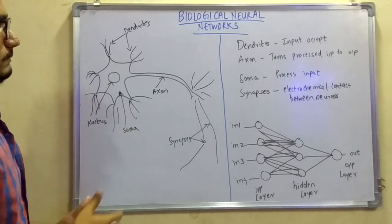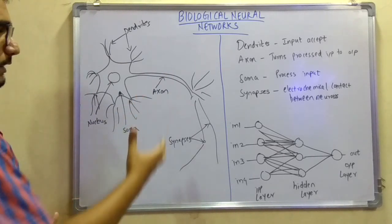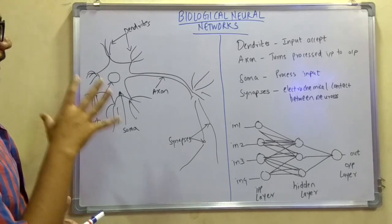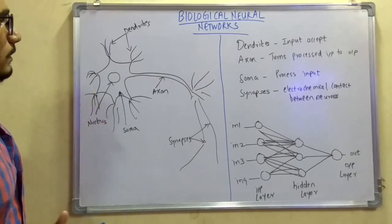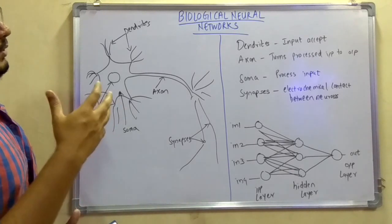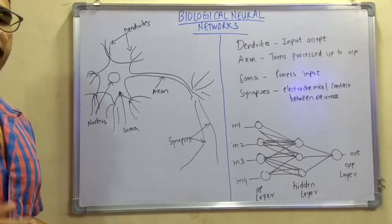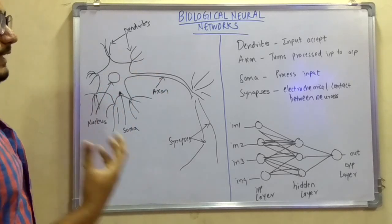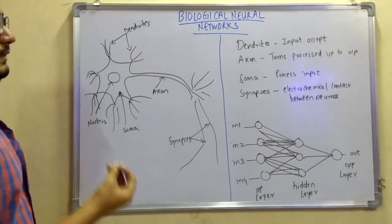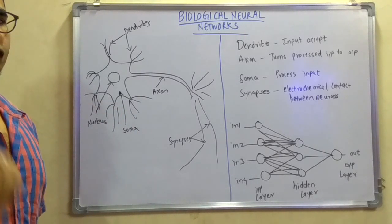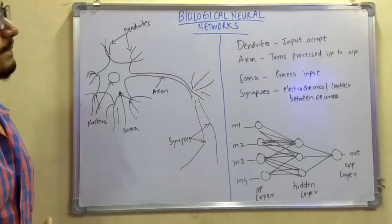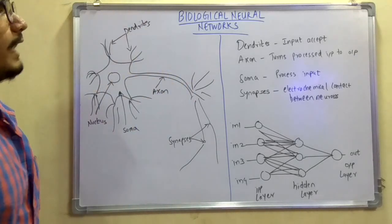Let us see what all functionalities or how this is actually processed. First of all, what are dendrites? Dendrites will basically accept any input from the external agent. Dendrite will take or it will accept happily any input whether it is an emotion or whether it is a consciousness or whether it is sadness, agony, anger, or something like that. Then we have the axons.